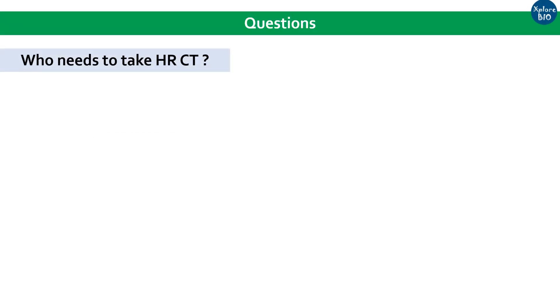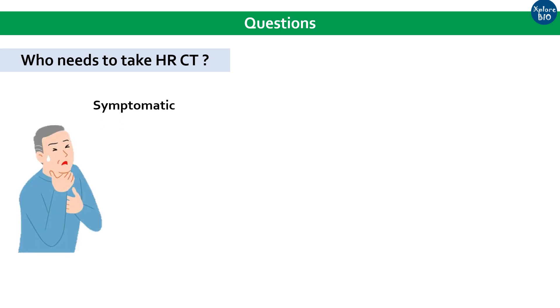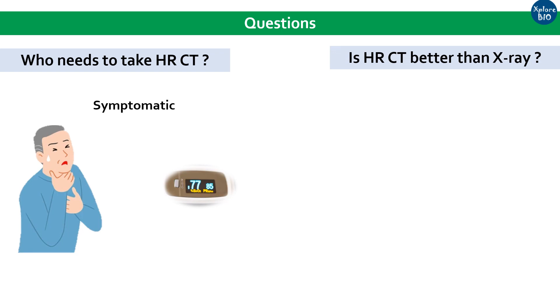Patients showing symptoms of COVID-19 — any kind of difficulty in breathing, coughing, or lower SPO2 levels — are usually required to go for HR-CT even if the RT-PCR and other test reports are negative. HR-CT scan is better than X-ray for early detection, as X-rays rarely detect low or moderate pneumonia during early stages of infection.